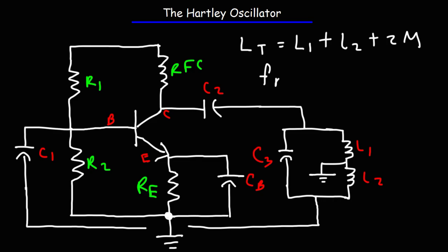Now the resonant frequency of this LC network is going to be the same formula as always. It's 1 over 2π times the square root of LC, but it's going to be LT times C3. So that's the formula you need to calculate the resonant frequency of this particular circuit.